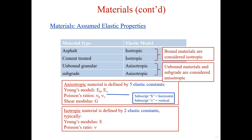We also learned how to decide and choose material properties. The materials are assumed to have elastic properties. The bound materials — asphalt and cement — are considered anisotropic, while unbounded materials and subgrade are also considered anisotropic. Anisotropic means the properties in the horizontal and vertical directions are different, whereas homogeneous means the property is the same for any direction or anywhere within the material.